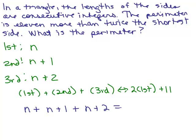And that's going to be the same thing as 2 times the first side. Well, what's the first side? It's N. So it's 2 times N, plus 11. So that's 11 more than twice the shortest side.